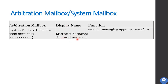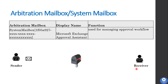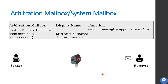The first arbitration mailbox is Microsoft Exchange Approval Assistant. Before an email is delivered to the user or distribution group, that email is saved or held by this arbitration mailbox if someone has set this type of rule. The email should be approved by some administrator or manager, and unless that approval is given, the email stays there. After approval, the email will be delivered to the end user, recipient, or distribution group.